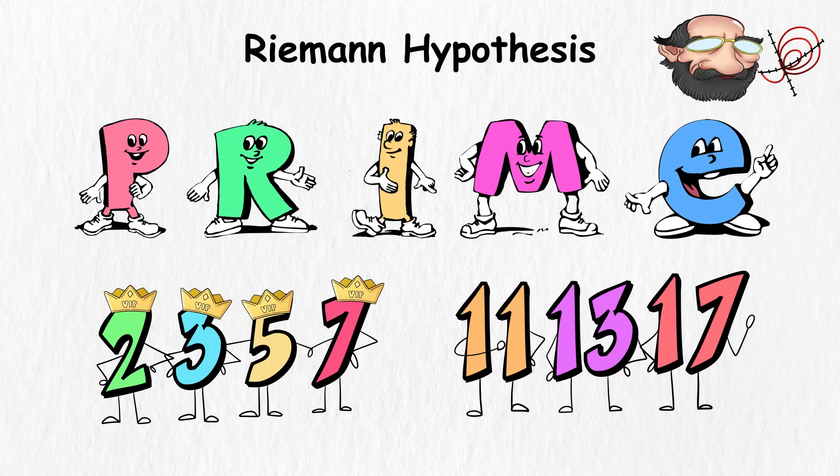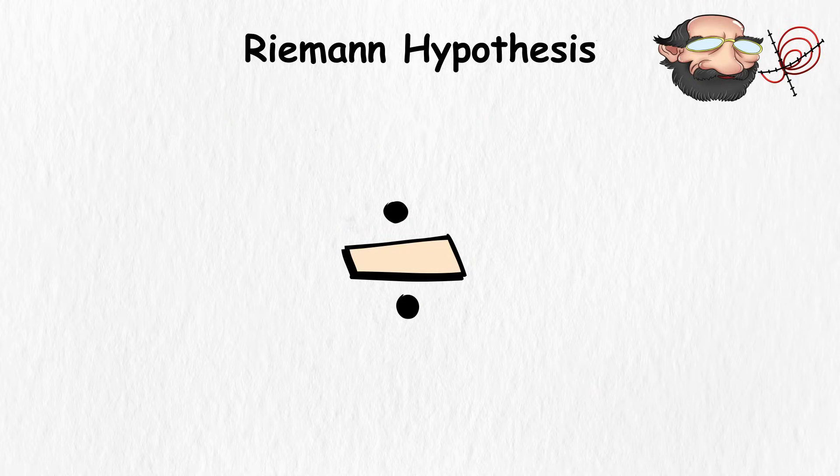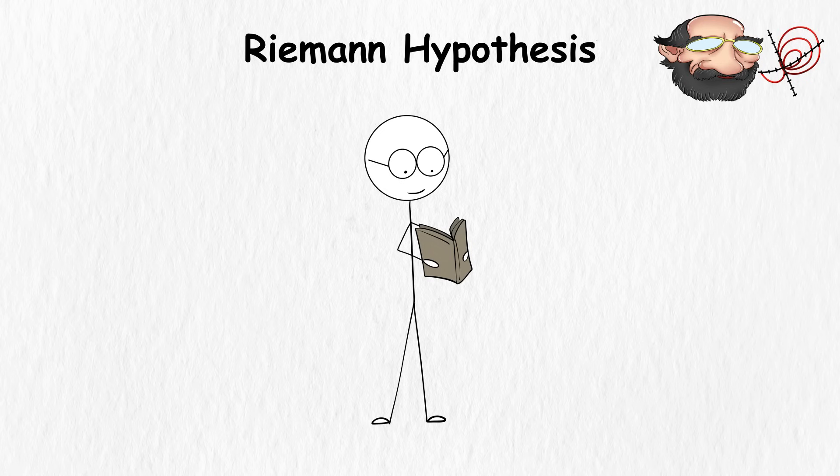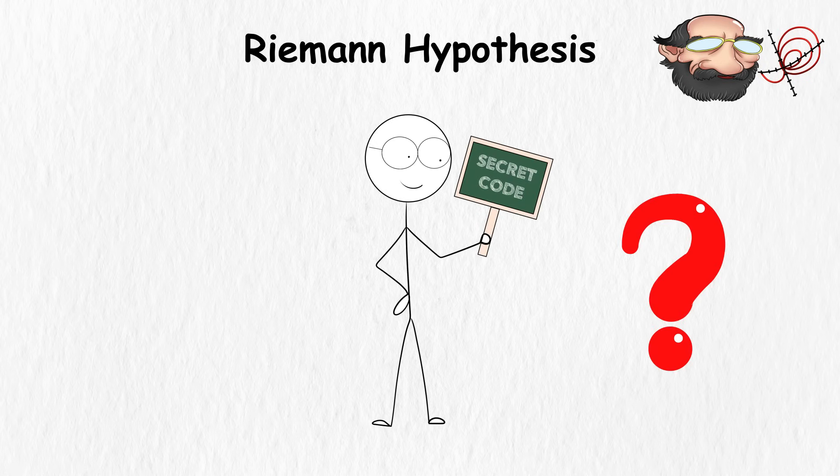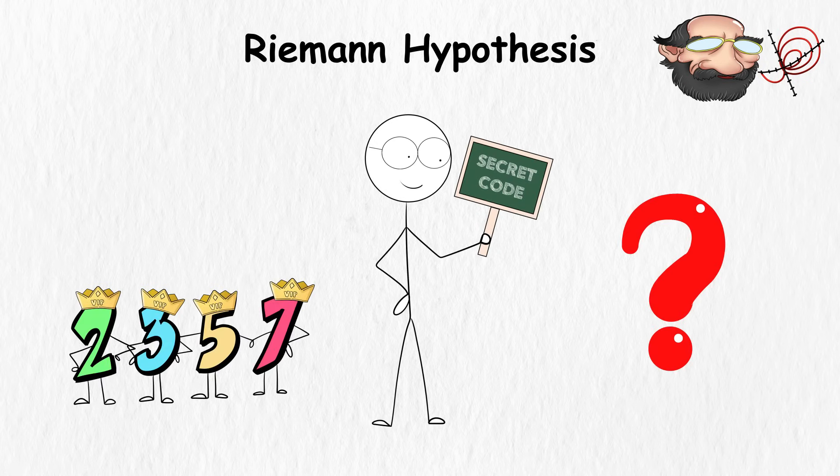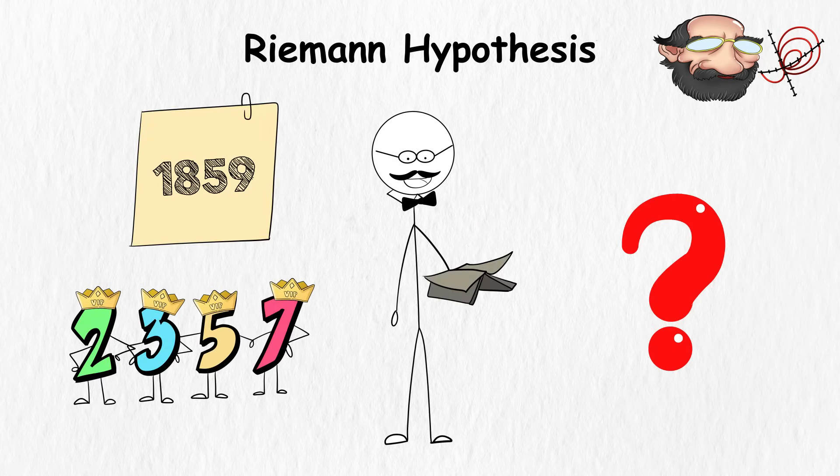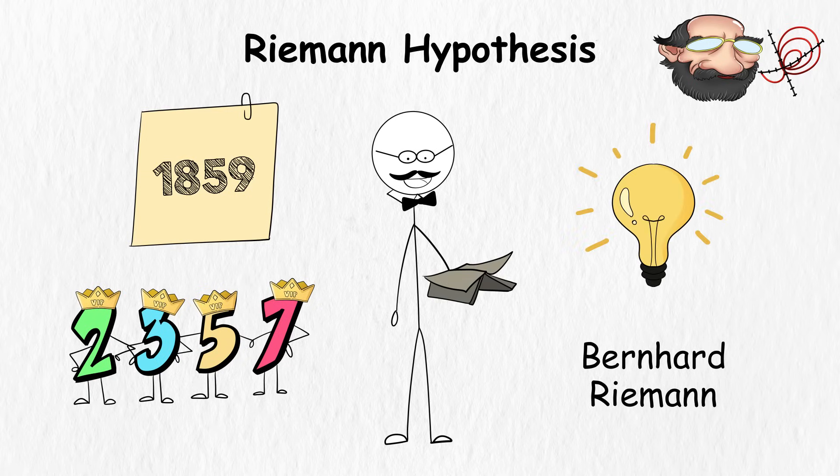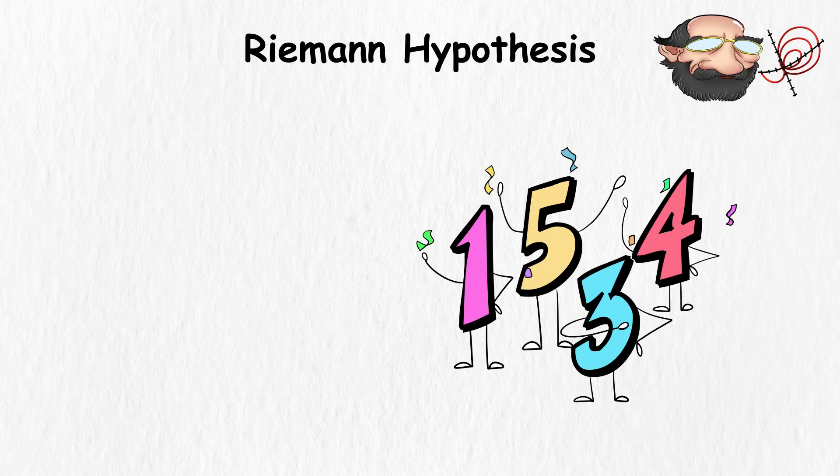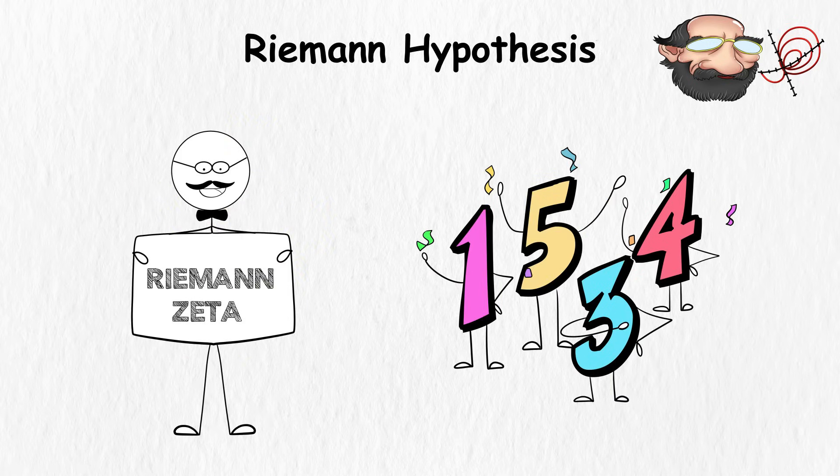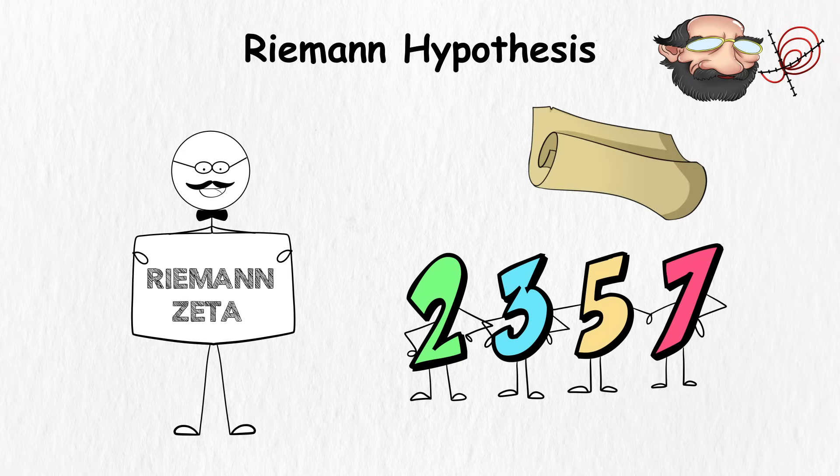These primes are super special because they can't be divided by anyone or anything except themselves and the number one. Mathematicians are always trying to figure out the secret code of these prime VIPs' appearances. Back in 1859, a mathematician named Bernard Riemann had an idea at this number party. He whipped up a magical tool, the Riemann zeta function.